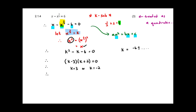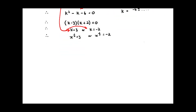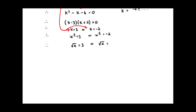Then I substitute back what I started with — x to the power of a half equals k — so I get x to the power of a half equals 3, or x to the power of a half equals negative 2. Since anything to the power of a half is a square root, this becomes: square root of x equals 3, or square root of x equals negative 2. Squaring both sides gives x equals 9 or x equals 4.